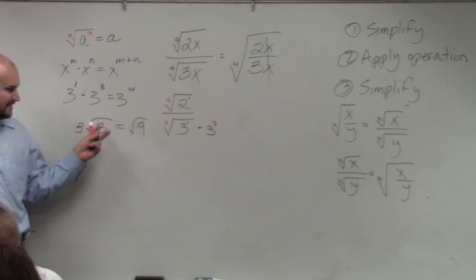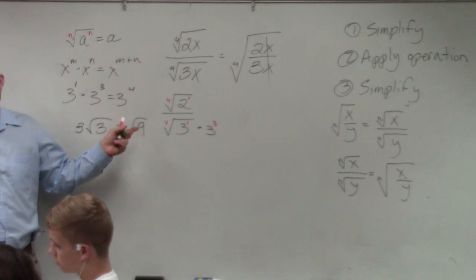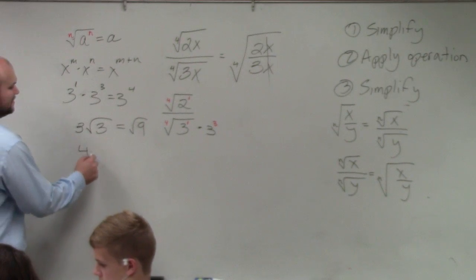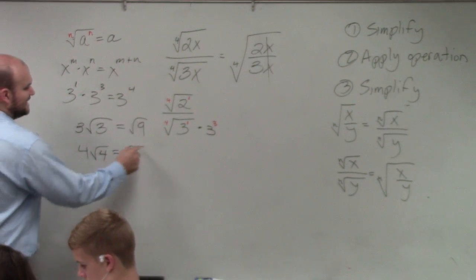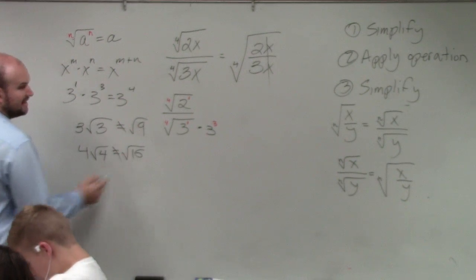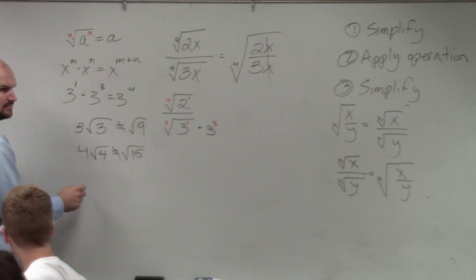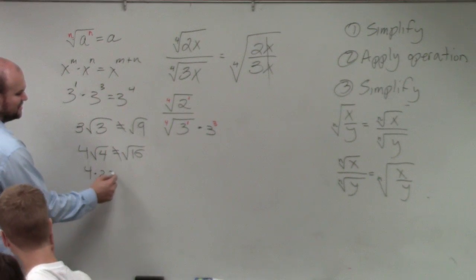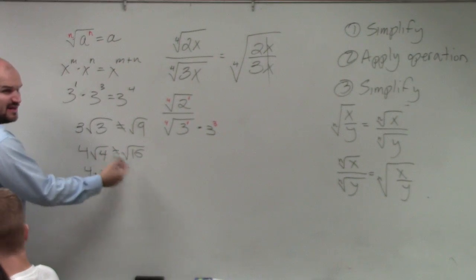Here comes the problem. Can you do 3 times the square root of 3? Does that equal square root of 9? No, it doesn't. And if you guys don't believe me, do this. 4 times square root of 4, that does not equal the square root of 16. Because what's the square root of 4? 2. 4 times 2 equals 8. The square root of 16 is equal to 4. So do you guys see how that doesn't work?